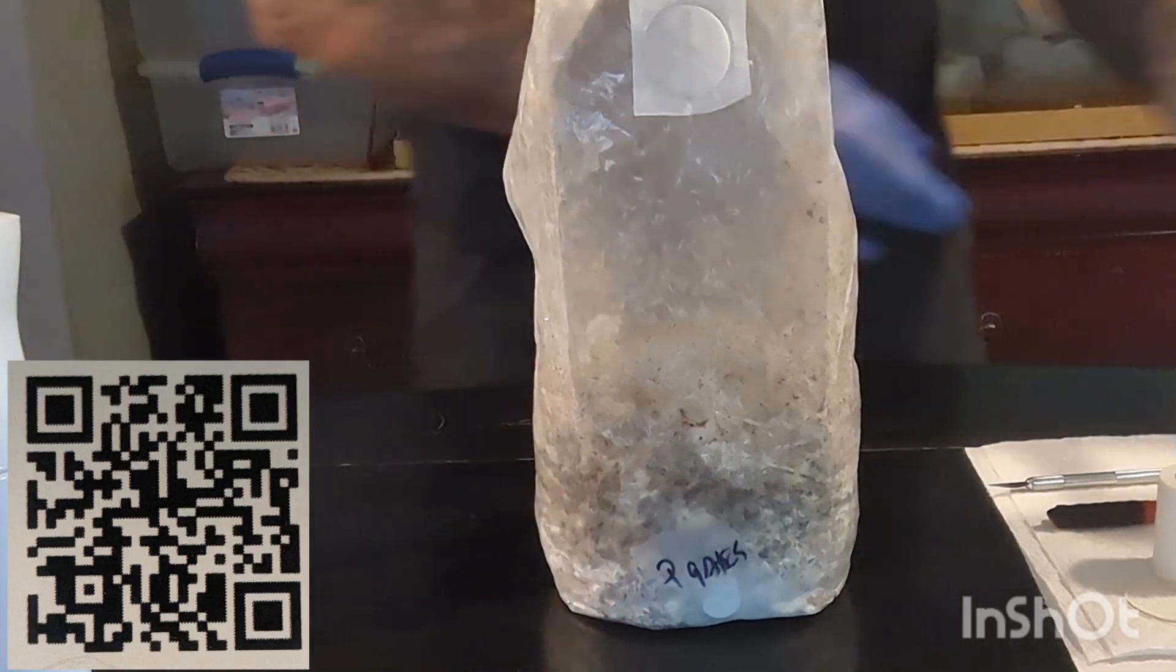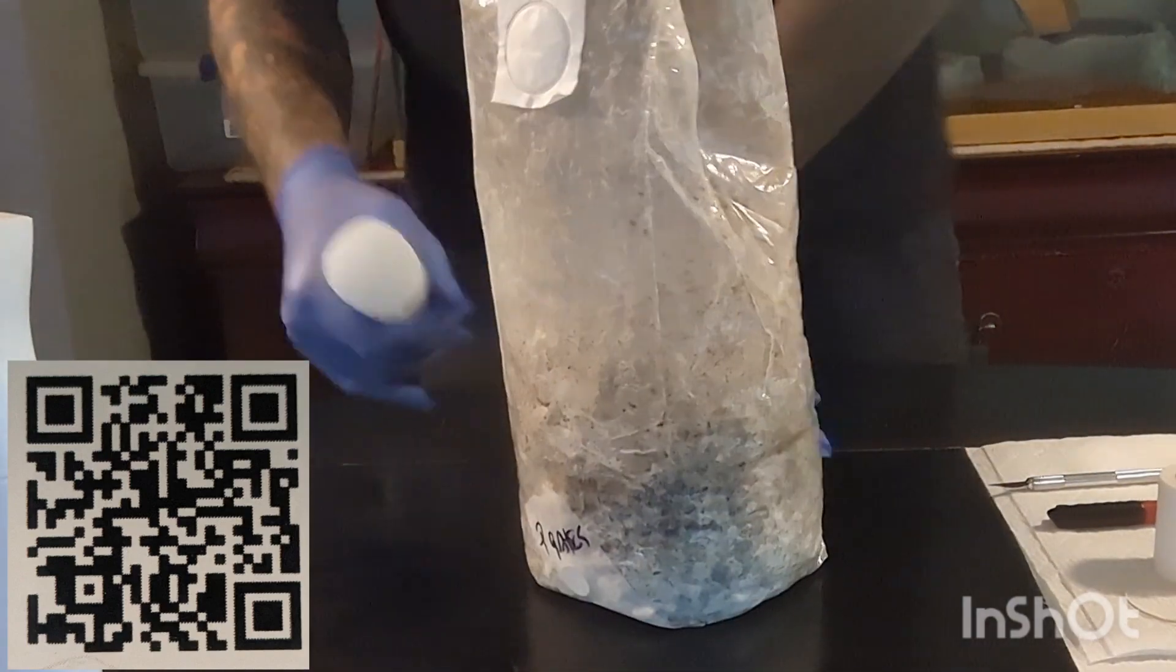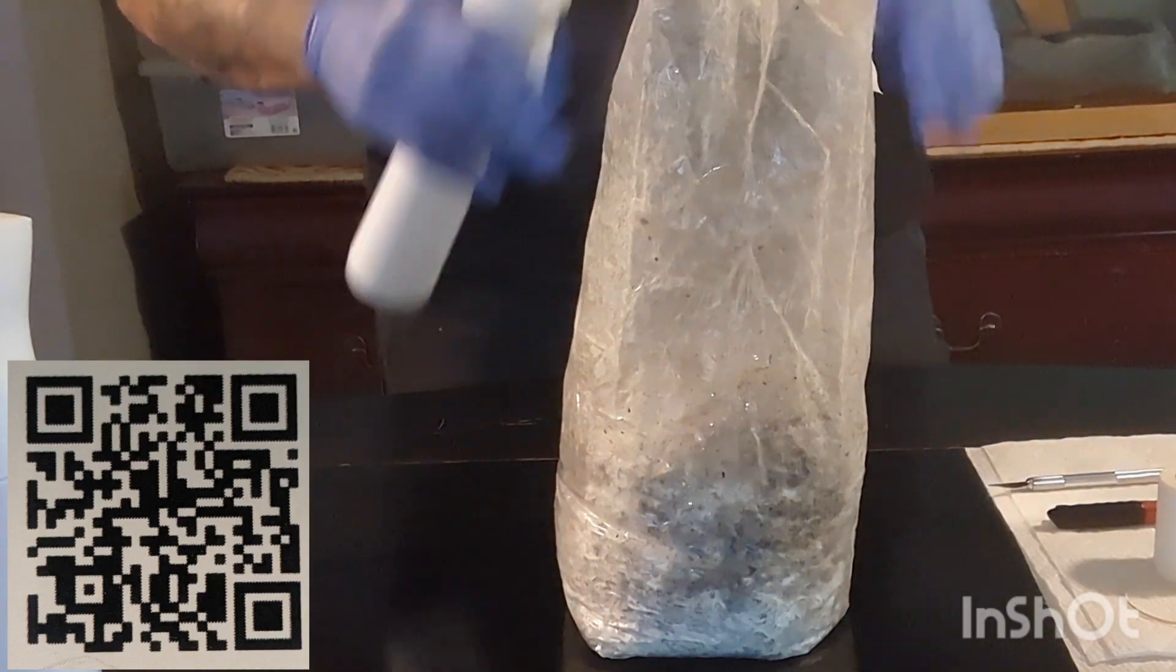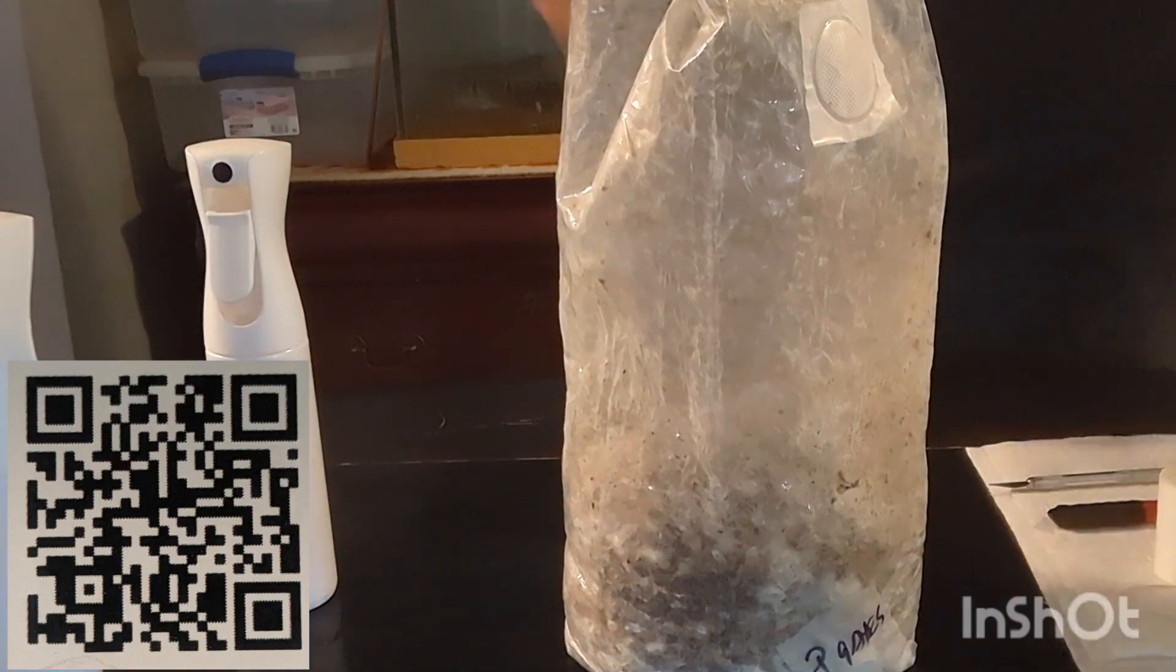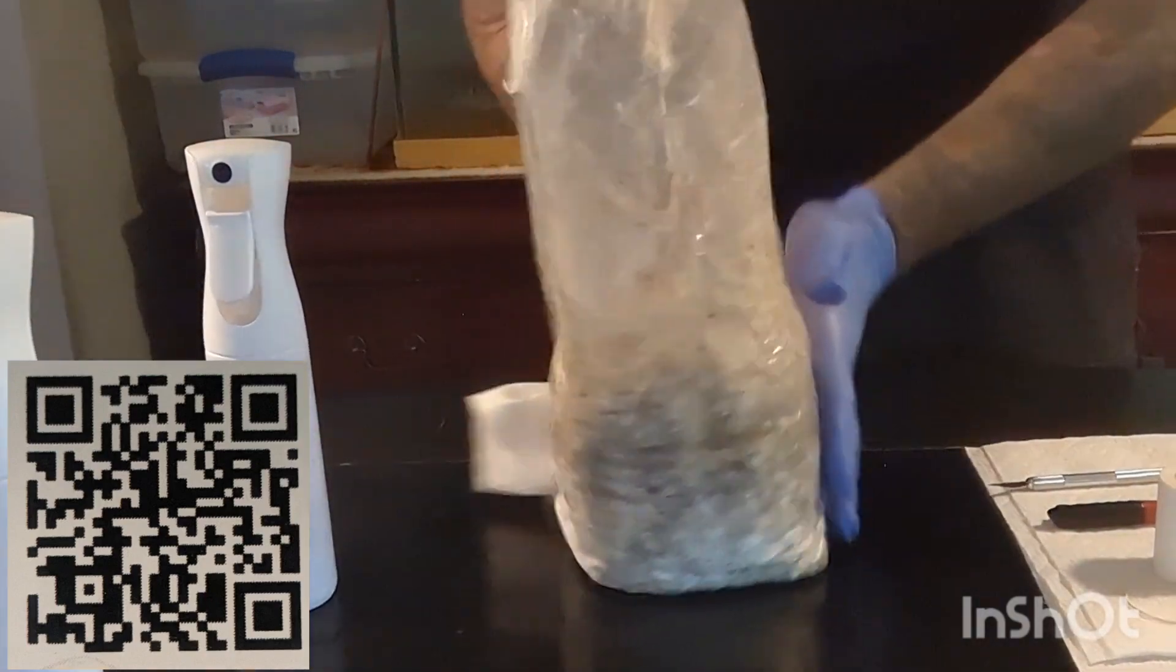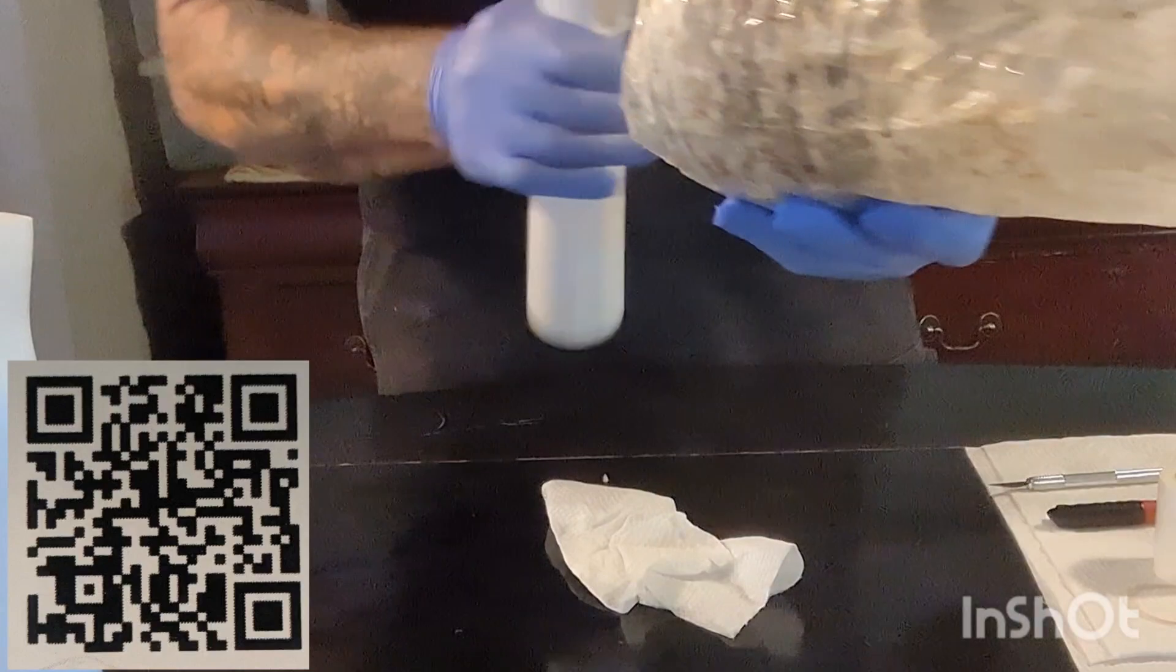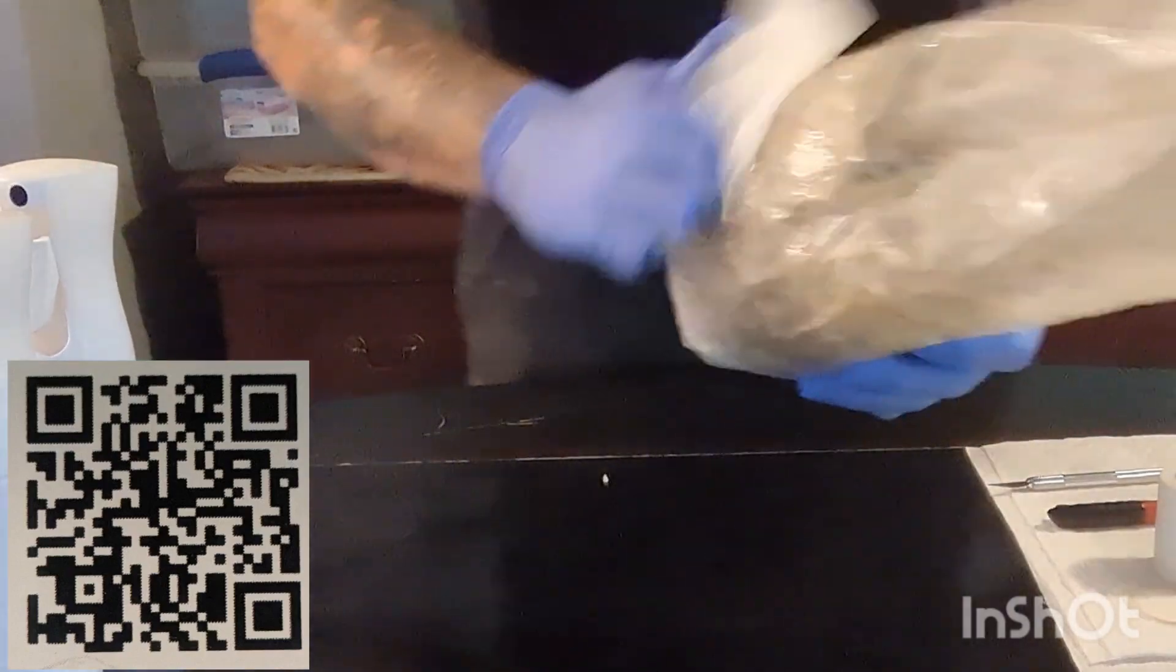We're going to clean it down with 70% isopropyl. This is just one more way that you can do it. This way is if you don't want to put it into a tub and you don't want to do anything except grow the mushrooms out of this bag. What we want to do is spray it down with alcohol, get it real clean.